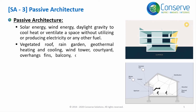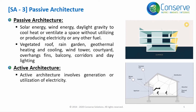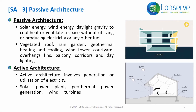Corridors and daylighting are also examples. Active Architecture involves generation or utilization of electricity. Examples of Active Architecture are solar power plant, geothermal power generation, wind turbines, and conventional heating and cooling technologies.